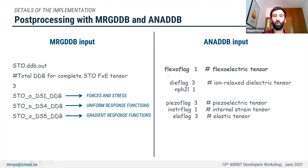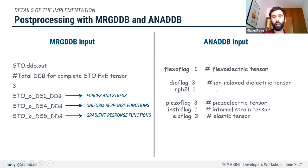The ANADDB input is very simple — it suffices to include flexo=1. We also suggest including input variables showing the dielectric and uniform elasticity tensors in the output, because these tensors are related to some flexoelectric tensors via sum rules. The fulfillment of these sum rules serves as a sanity check for the whole calculation and helps estimate whether the flexoelectric tensor is converged.